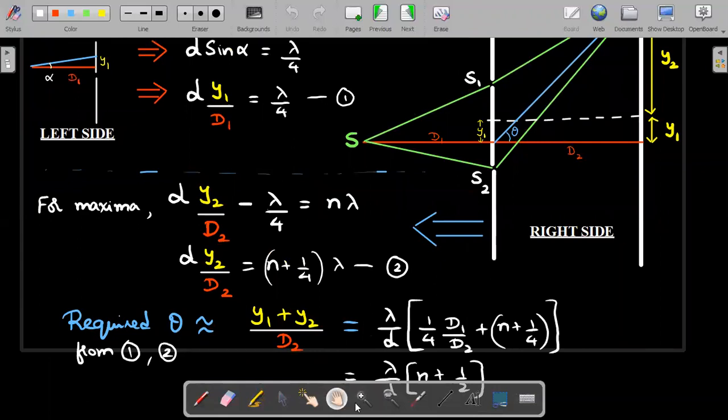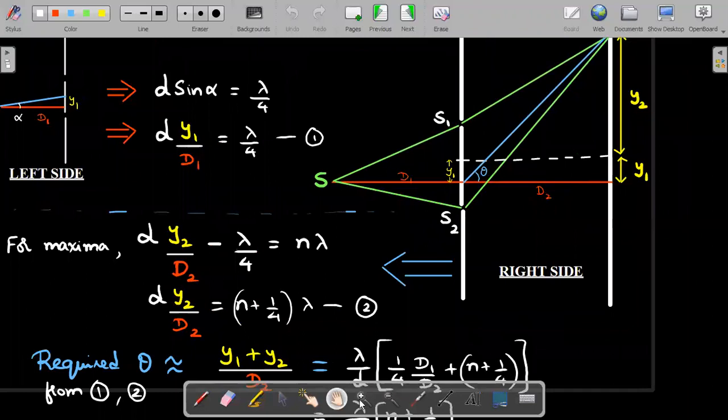So I rearranged it and I ended up having d into Y2 by D2 is equal to n plus one by four into lambda. So these are the two things. Then what is theta? Theta is, as you could see in this situation, Y2 plus Y1 divided by D2.